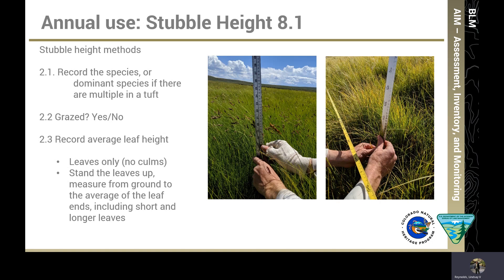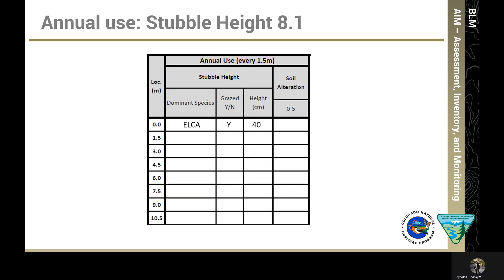Record the species of the tuft of graminoids you have selected; if there are more than one species in the tuft, record the dominant species. Mark whether that tuft is grazed — a simple yes or no. Then record the average leaf height of the graminoids in the tuft. Measure leaves only; do not measure culms or other parts. Stand the leaves up and measure from the ground to the average of the leaf ends, including both short and longer leaves. On the paper data sheet, record the species — in this case Eleocharis canadensis — whether grazed (yes), and the average leaf height (40 centimeters).